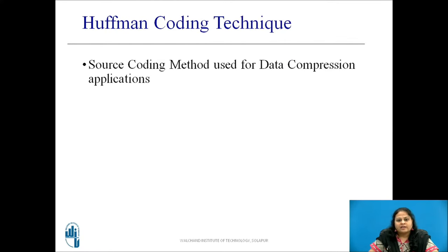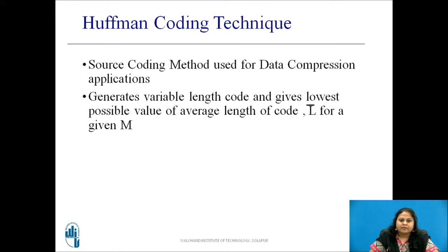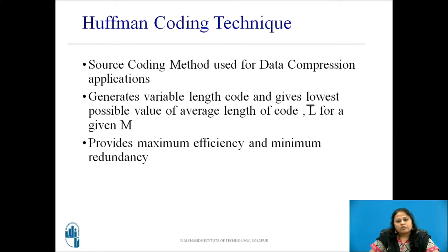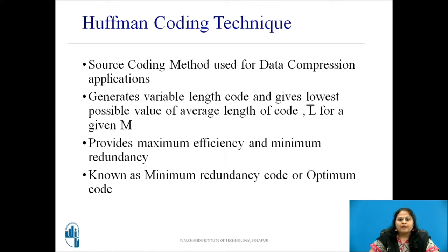Huffman coding technique is another type of source coding method which is used for data compression applications. It generates variable length code and gives the lowest possible value of average length of code, that is L bar, for a given value of M, that is the number of symbols used for coding. It also provides maximum efficiency as it has lower L bar and minimum redundancy. It is known as minimum redundancy code or optimum code.